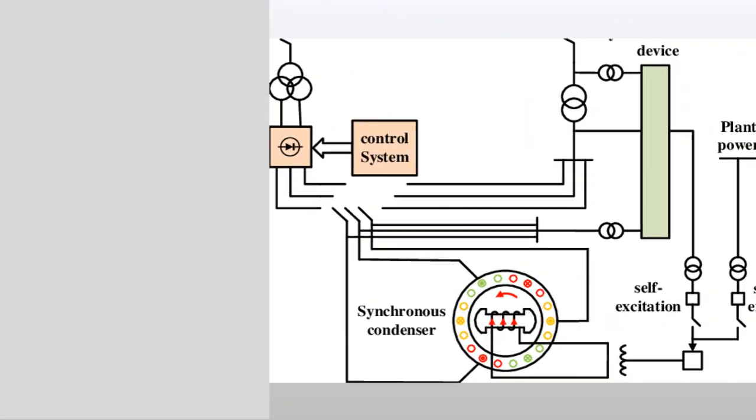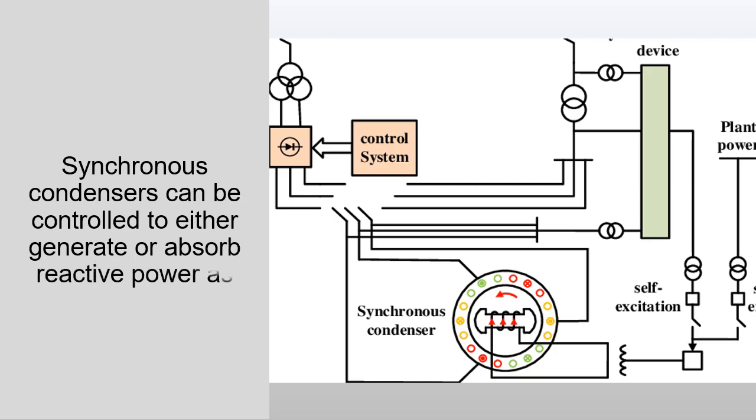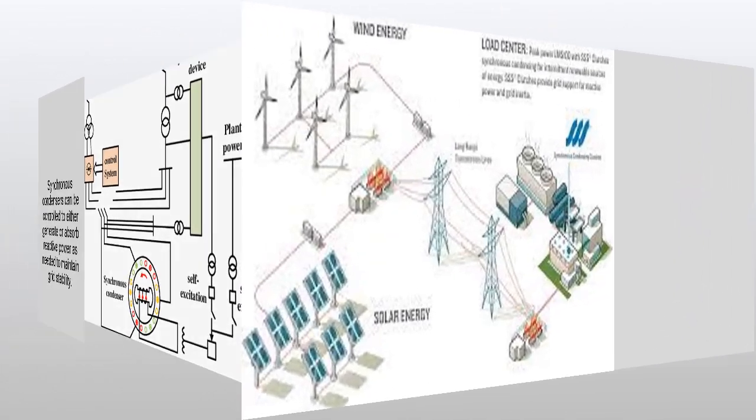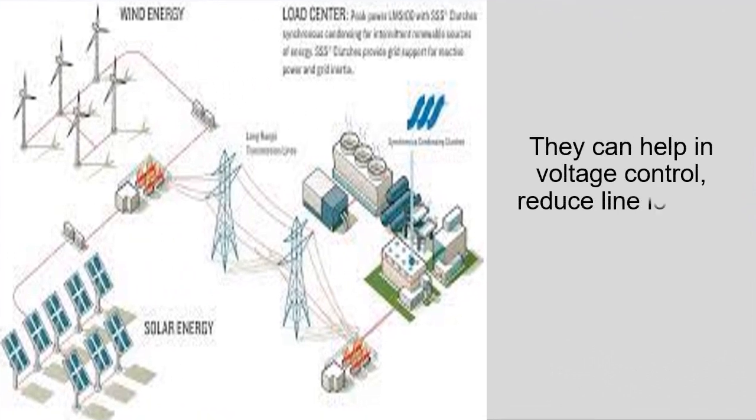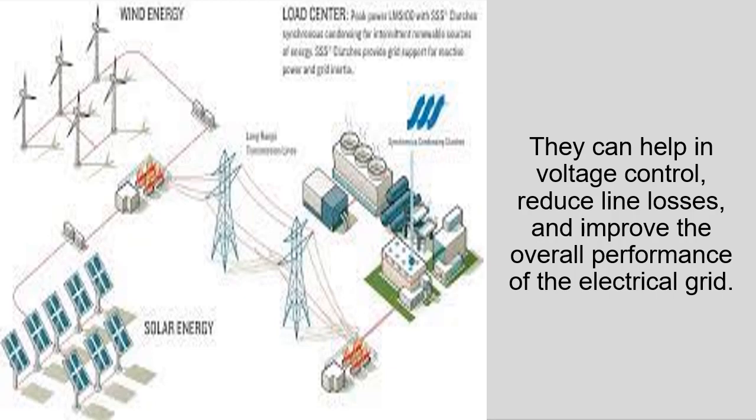Synchronous condensers can be controlled to either generate or absorb reactive power as needed to maintain grid stability. They can help in voltage control, reduce line losses, and improve the overall performance of the electrical grid.